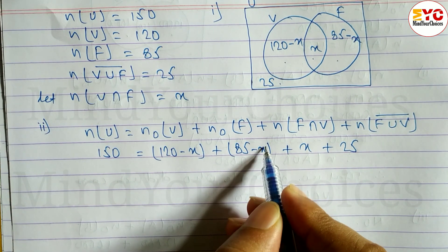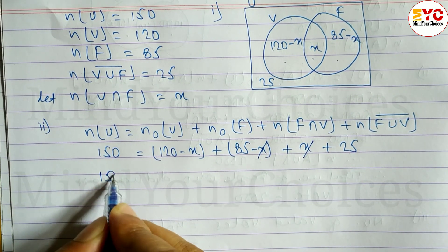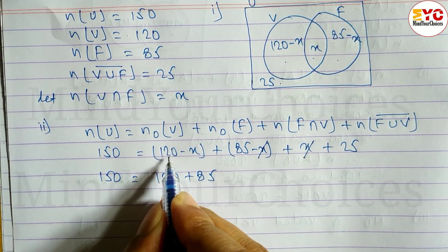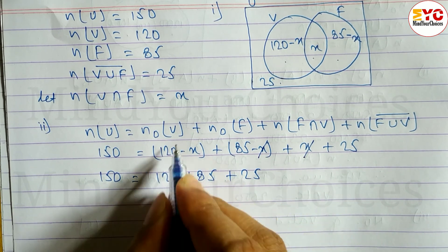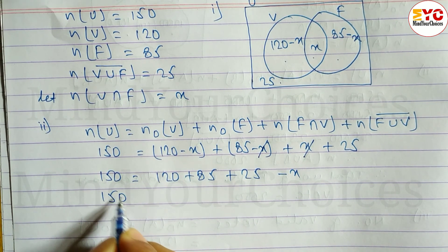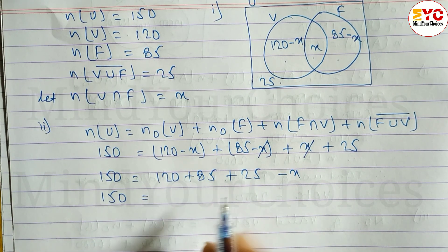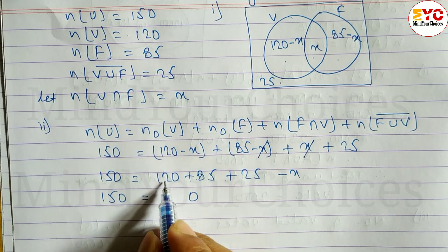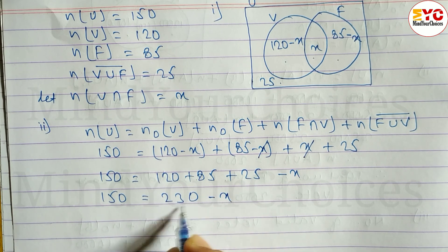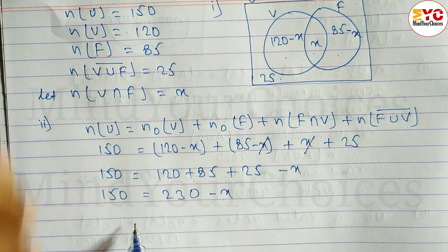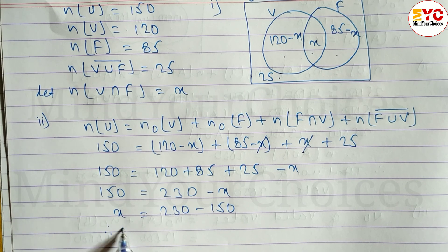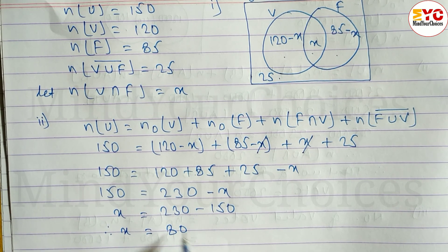You can see that X appears both positive and negative, so we can cancel. Simplifying: 150 = 120 + 85 + 25 − X, which gives 150 = 230 − X. Therefore X = 230 − 150, so X = 80.